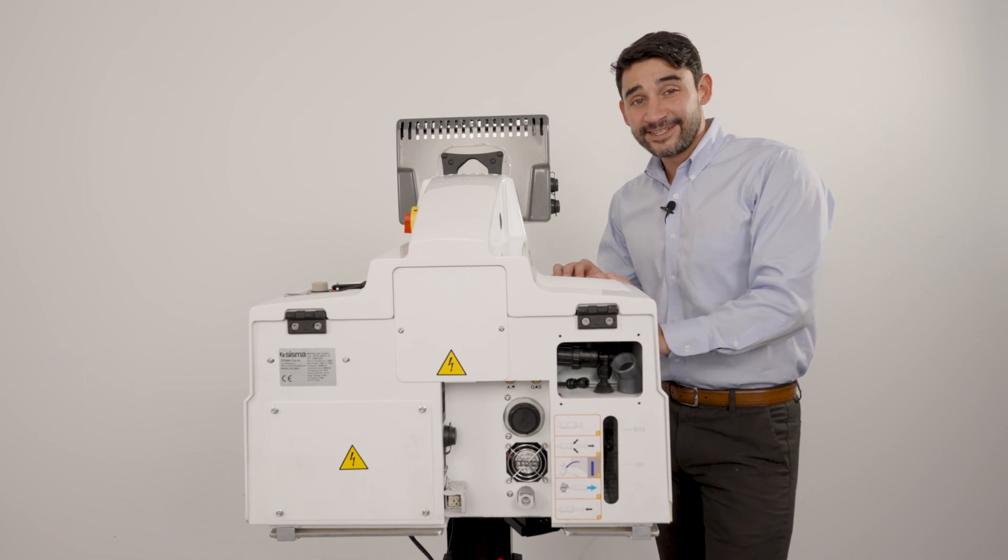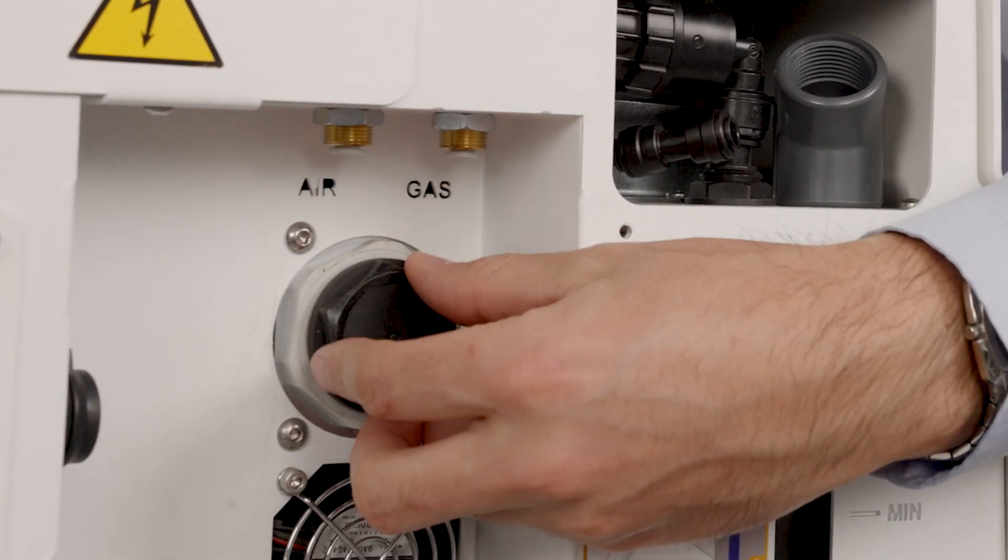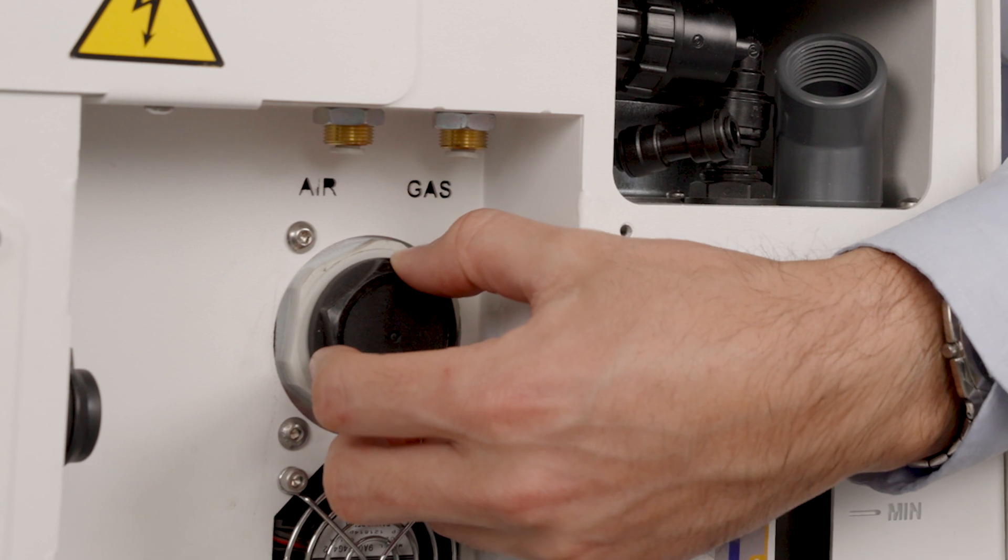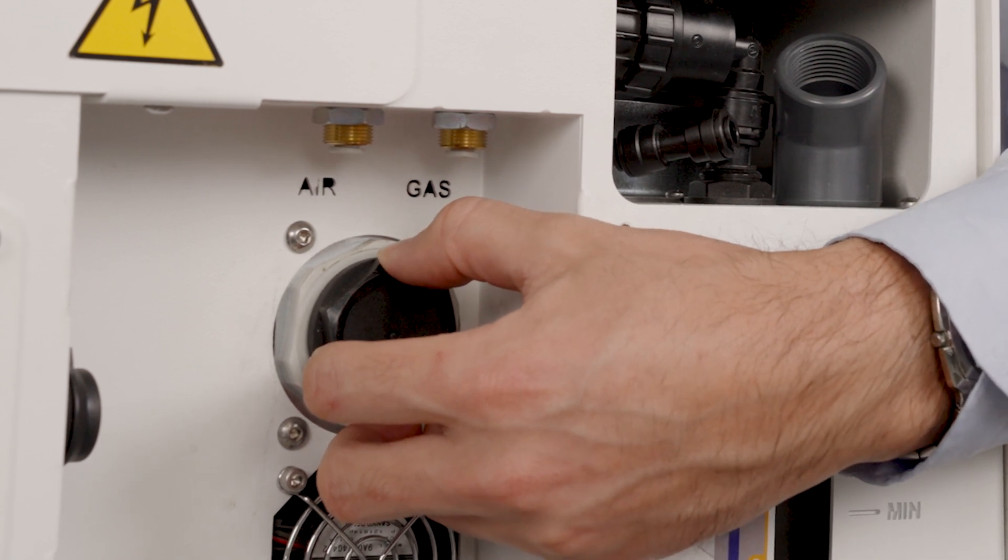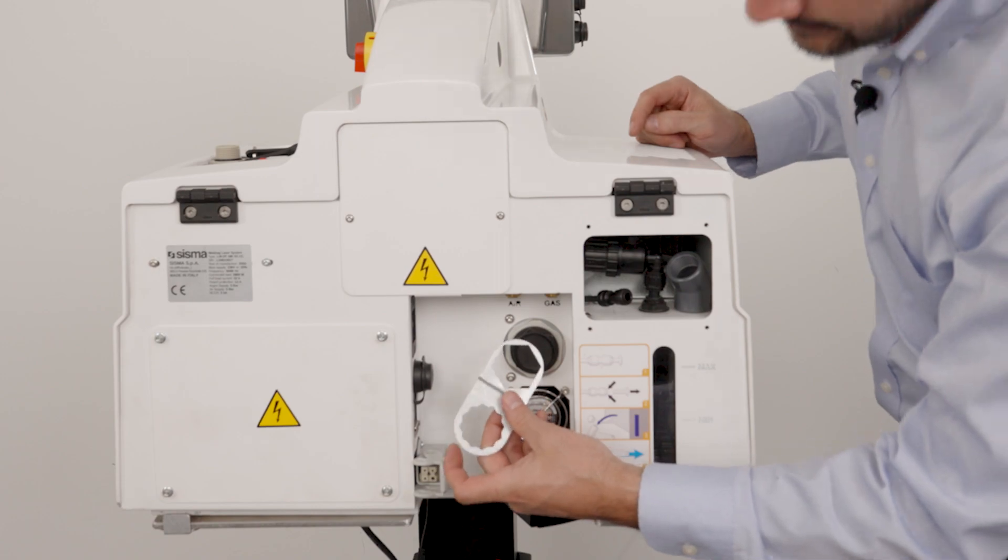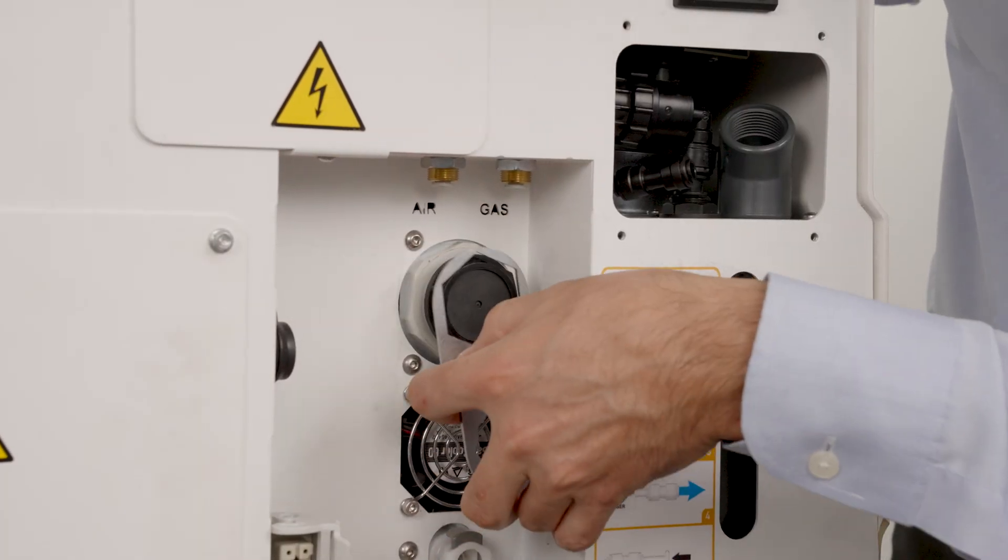Now let's replace the deionizing water filter. It's located right here in the back of the machine. We just need to take this cap off using the provided tool key. We're going to sit over this cap and go ahead and loosen.